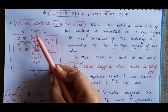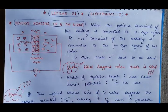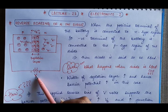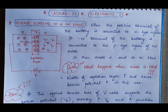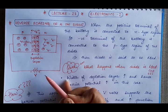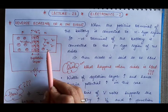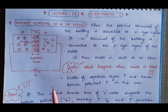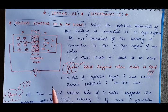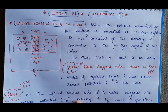Regarding the energy level diagram — showing the valence band and conduction band as we did for forward biasing — you can draw that yourself. When you apply reverse voltage V, the difference between the conduction bands and valence bands increases from minus VB to minus VB minus V, which means the effective barrier becomes VB plus V. This is all for this lecture. In the next lecture, we will discuss the forward and reverse bias characteristics of the PN diode.